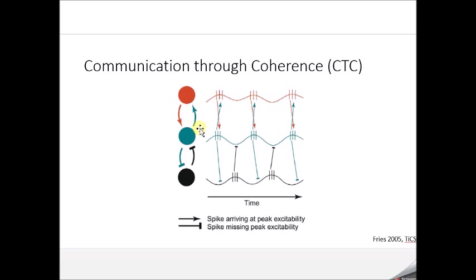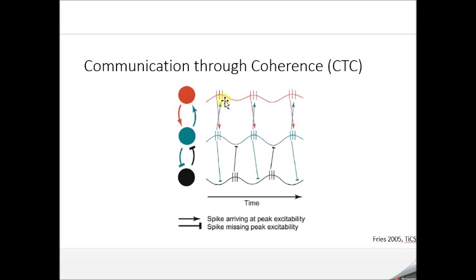These red and blue oscillations — or red and blue populations — are synchronized in that when the red population is at its peak excitability and firing the most action potentials, the blue population is also at that peak excitability. If action potentials project from the blue population to the red population without much synaptic delay, the action potential will arrive in the other region during its excitable phase.